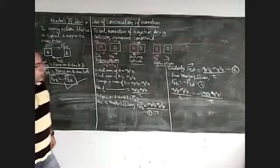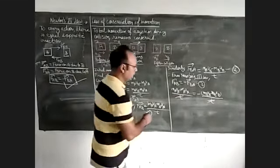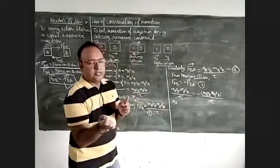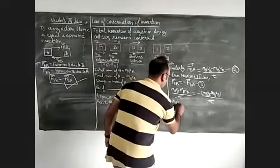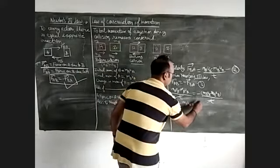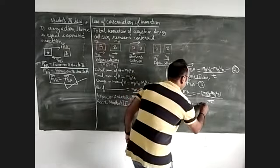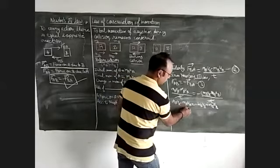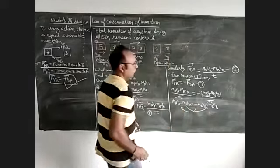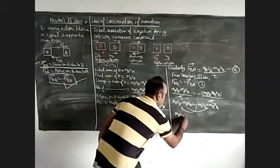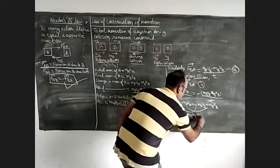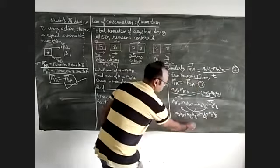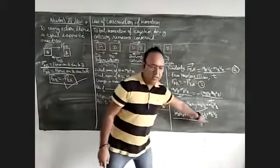Time t cancels from both sides. Collecting initial velocities on one side and final velocities on the other, and opening the bracket with the minus sign: m_A × V_A − m_A × U_A = −m_B × V_B + m_B × U_B. Rearranging, we get: m_A × U_A + m_B × U_B = m_A × V_A + m_B × V_B. This left side is the initial momentum before collision, and the right side is the final momentum after collision.